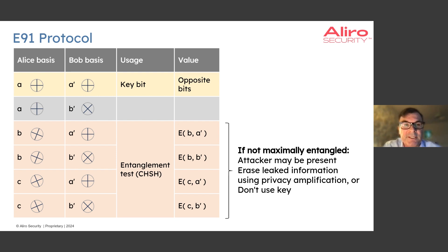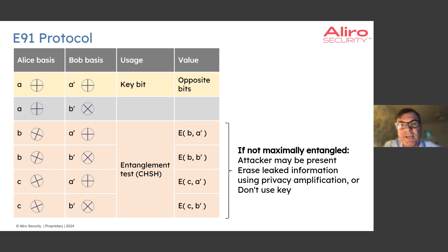In one of those six combinations — the one shown in yellow at the top of this table — Alice and Bob happen to choose the same measurement bases. And because we're using the sine minus state, Alice and Bob's measurements will always be opposite. So if Bob flips his bit, then Alice and Bob can agree on a key bit.